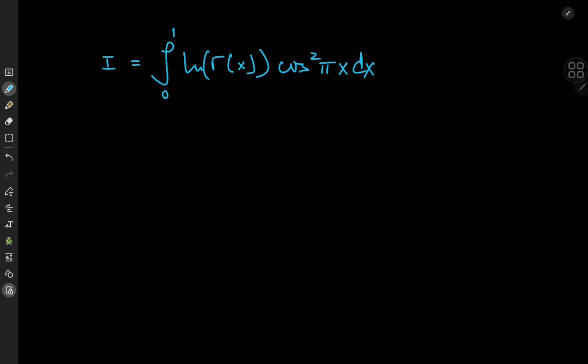Today we have this absolutely ridiculous integral: the integral from 0 to 1 of the natural logarithm of gamma of x times the square of the cosine of pi times x.